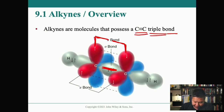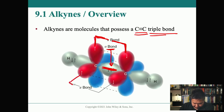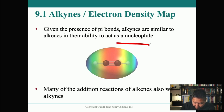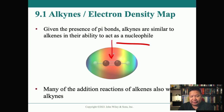A carbon-carbon triple bond has both the sigma bond and a pi bond from the P orbitals, but the third bond of the triple bond comes from another set of P orbitals. So a triple bond consists of one sigma bond and two pi bonds; a double bond has one sigma bond and one pi bond; a single bond has one sigma bond. Given the presence of pi bonds, alkynes are very similar to alkenes in their ability to act as a nucleophile, attacking carbocations and electrophiles.